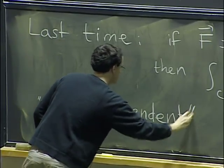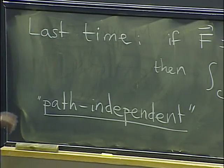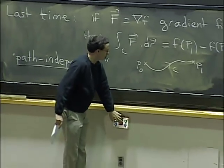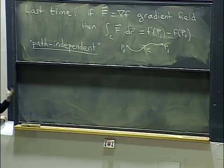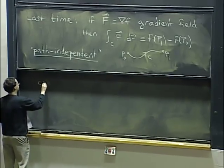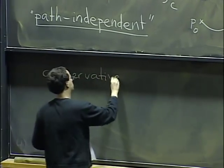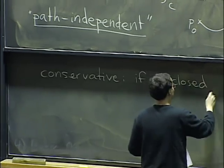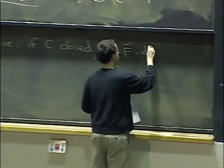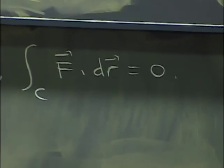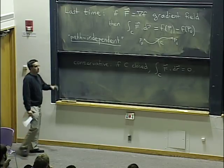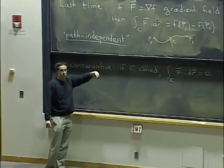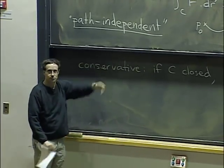We also said that the vector field is conservative because of conservation of energy, which tells you if you start at a point and you come back to the same point, then you haven't gotten any work out of that force. So if we have a closed curve, then the line integral for work is just zero. Basically we say that these properties are equivalent: being a gradient field, being path independent, or being conservative. Today we will see a criterion to decide whether a vector field is a gradient field and how to find a potential function.